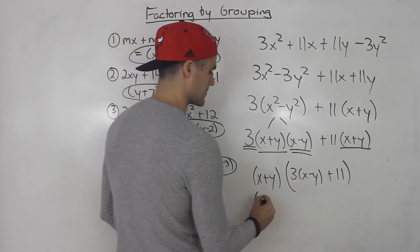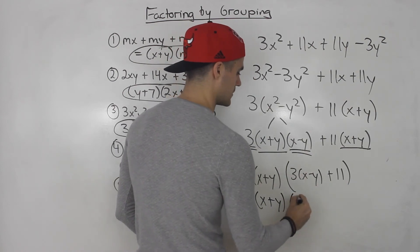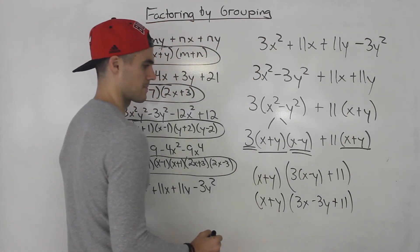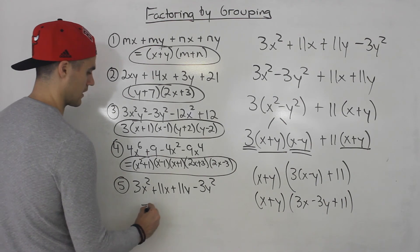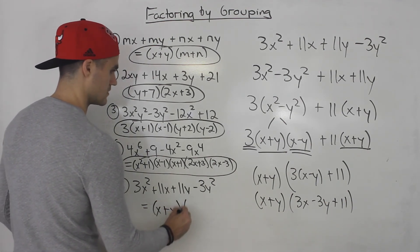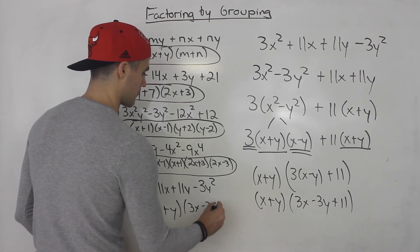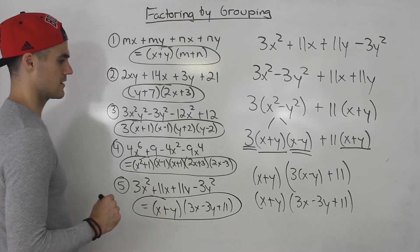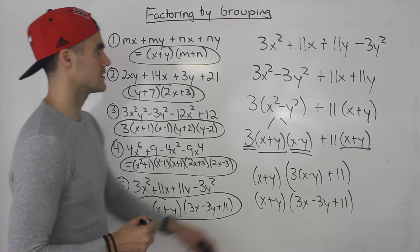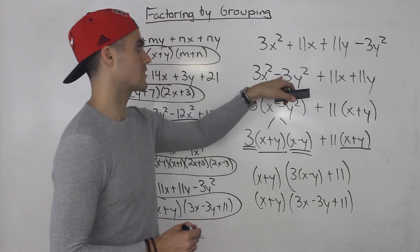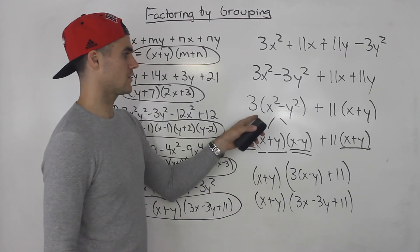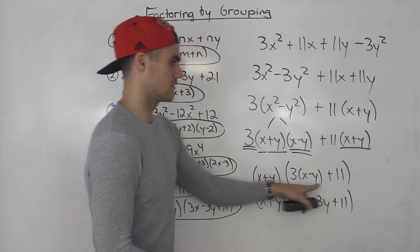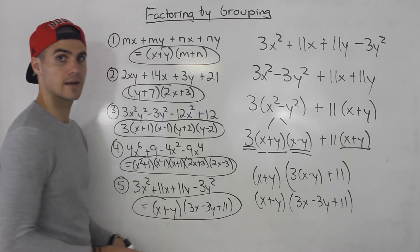Factoring out x plus y, the remaining bracket is 3 times x minus y plus 11, which simplifies by expanding to 3x minus 3y plus 11. So the final answer is x plus y times 3x minus 3y plus 11. To summarize: rearrange, factor by grouping, apply difference of squares, factor out x plus y, then simplify the remaining bracket.